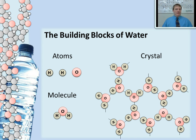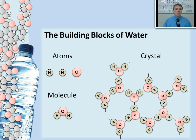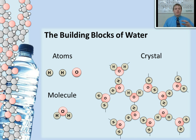Water is made up of atoms. Those atoms are bonded together a certain way to make molecules. And when frozen, those molecules will arrange themselves in repeating patterns to make crystals.